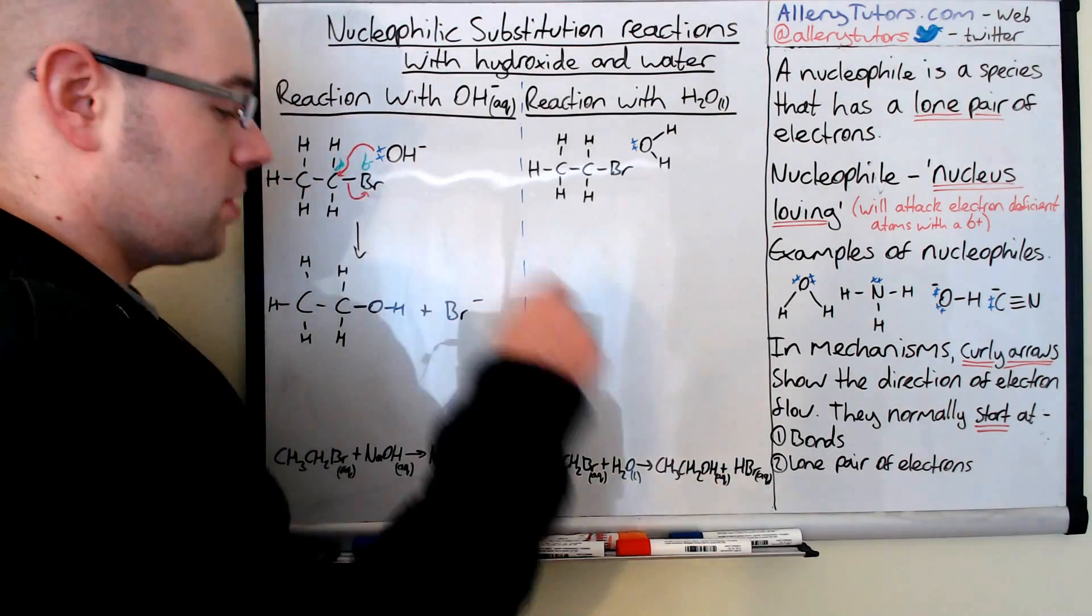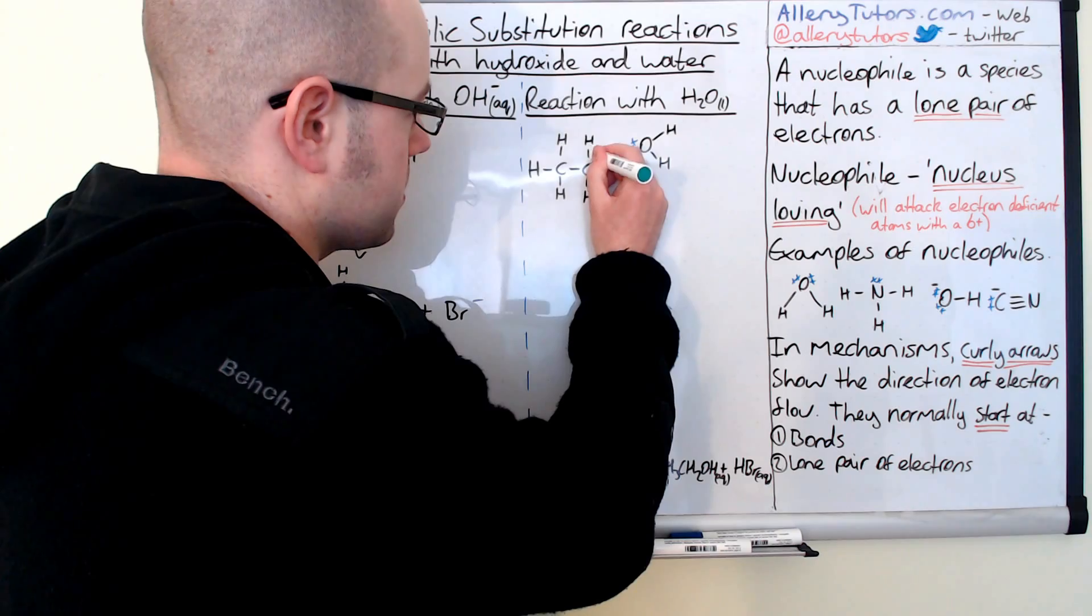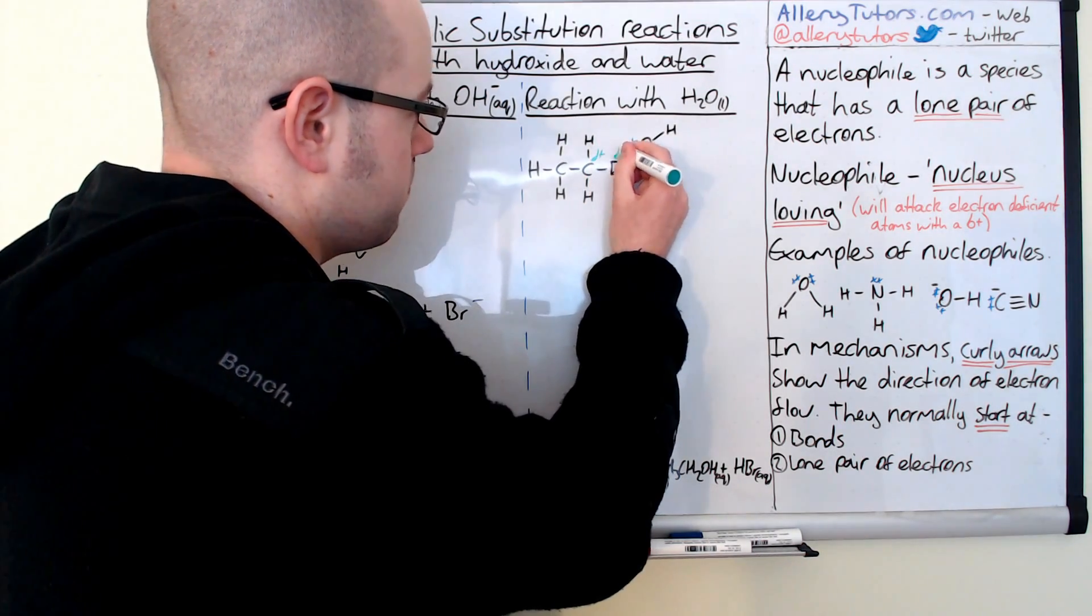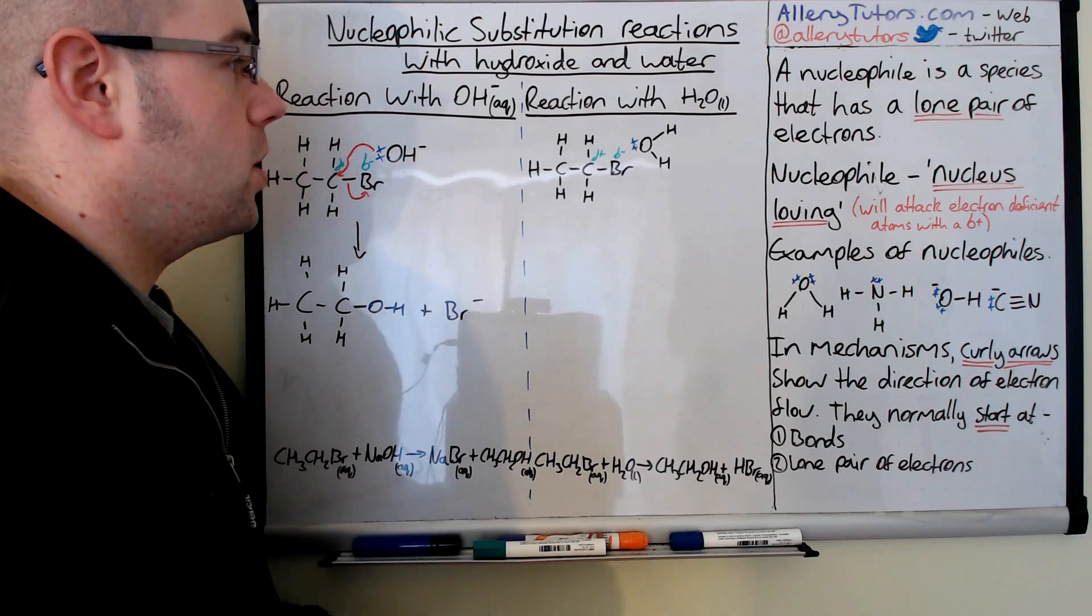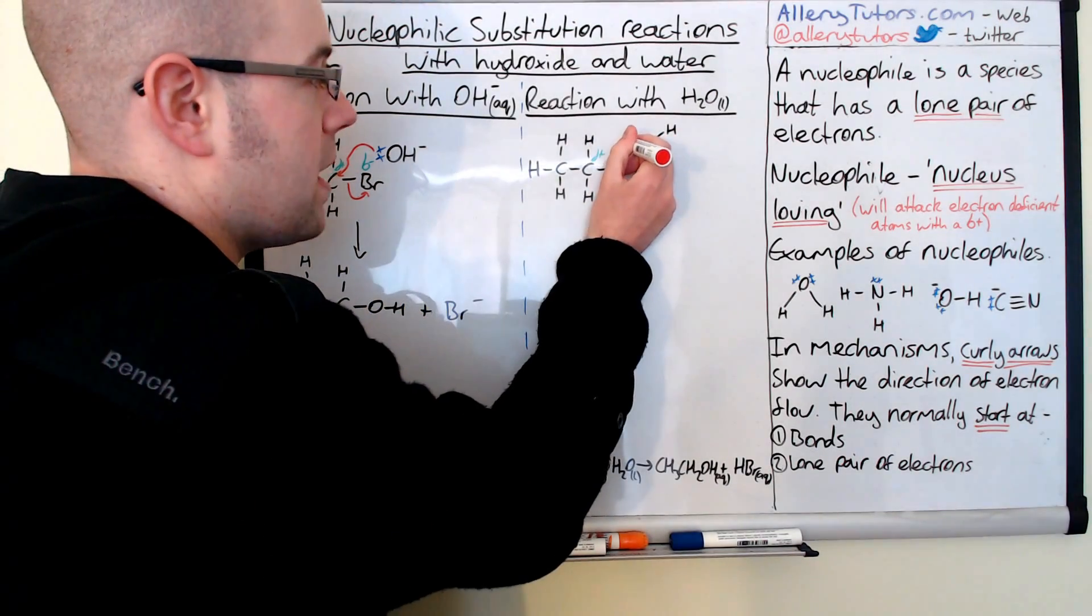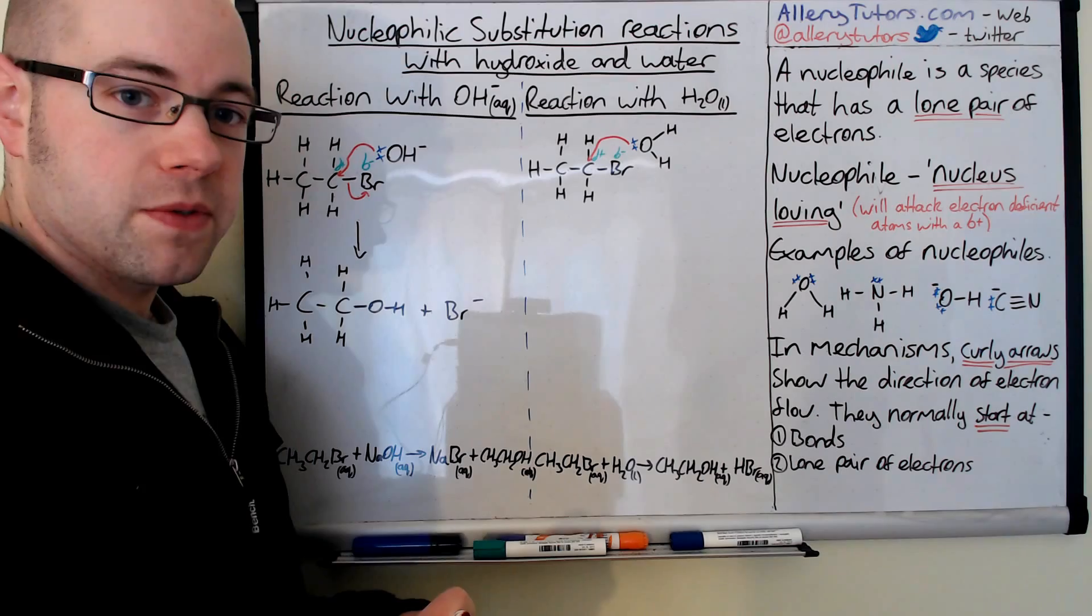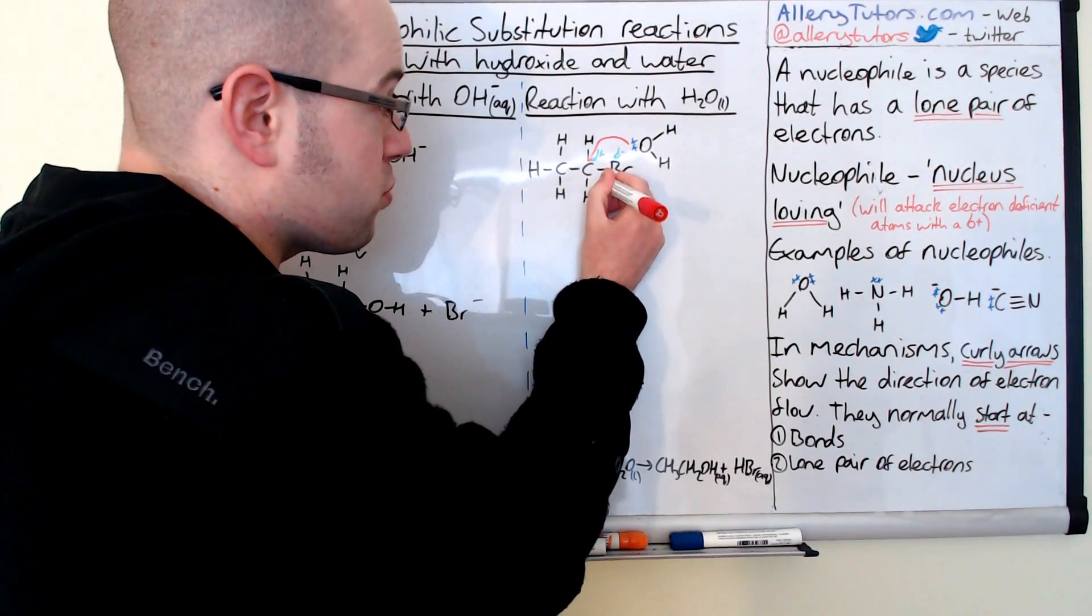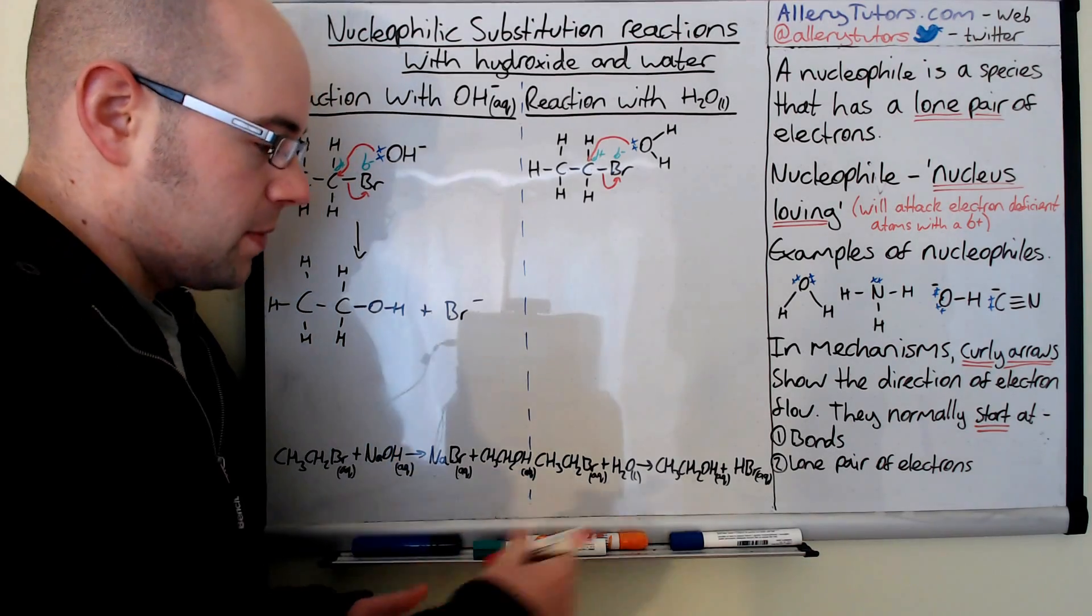So again, we're going to add our delta positive, delta negative. So delta positive carbon, delta negative bromine on there. Then we're going to draw our curly arrow. And again, it goes from the lone pair of electrons onto the delta positive carbon. And then again, the bond breaks from the bromine. So that's what we form there.